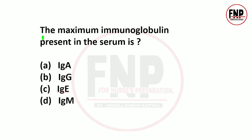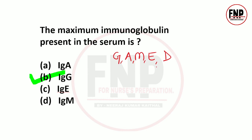Next question: The maximum immunoglobulin present in the serum is - IgA, IgG, IgE, or IgM? Option B is correct - IgG. Hamaari body ke andar IgG, IgA, IgM, IgE, IgD - kul 5 prakar ke immunoglobulins paaye jaate hain. IgG sabse zyaada number mein paaya jaata hai, yeh kul immunoglobulin ka lagbhag 80% hota hai. Immunoglobulin G is the maximum present immunoglobulin type in the serum.